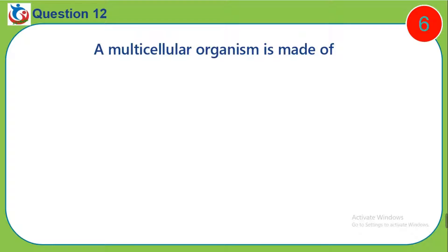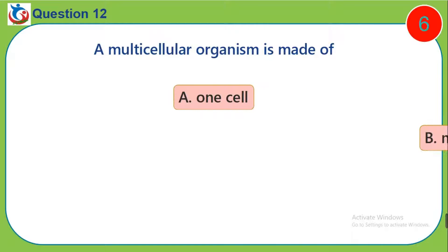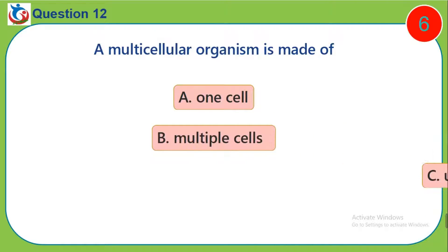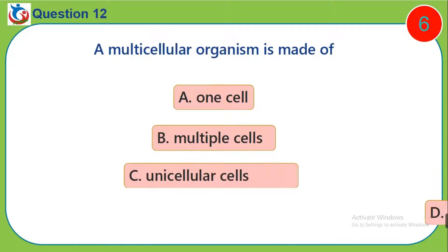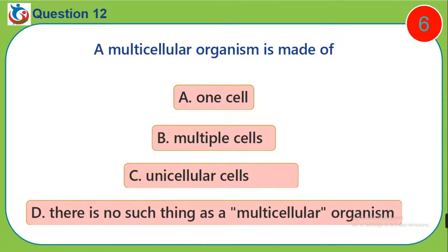Question 12. A multicellular organism is made of: A. One cell. B. Multiple cells. C. Unicellular cells. D. There is no such thing as a multicellular organism.